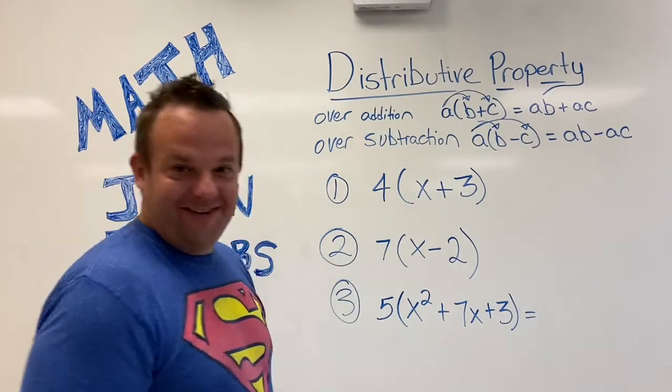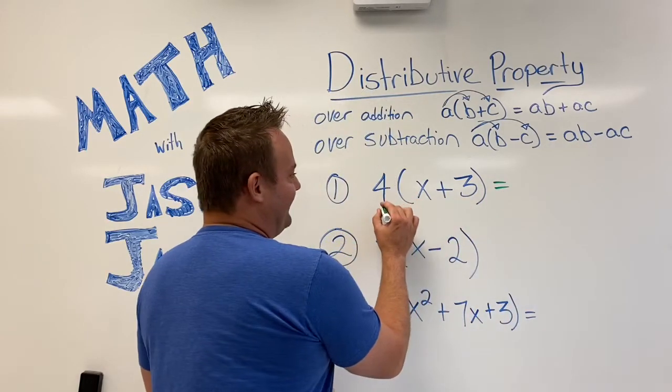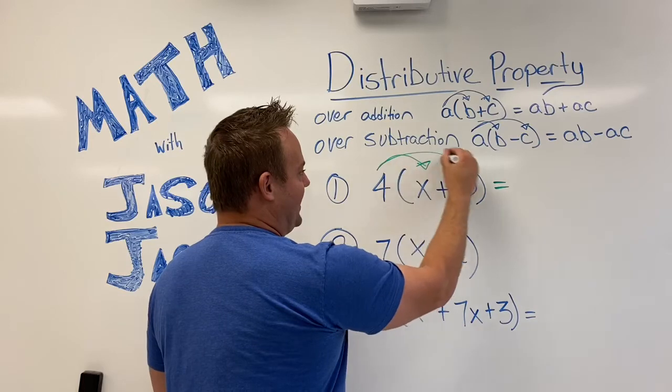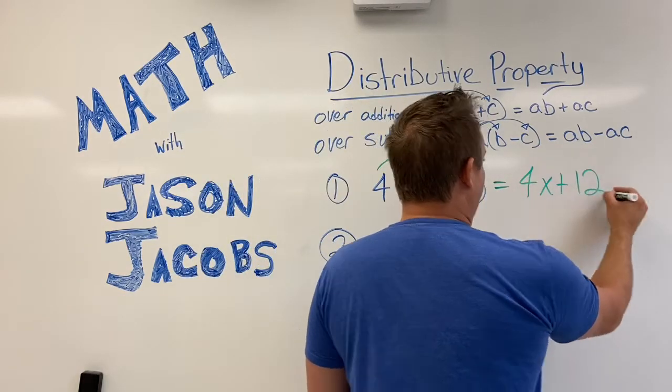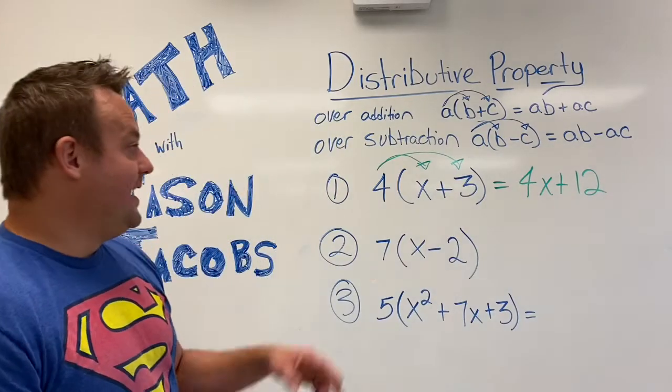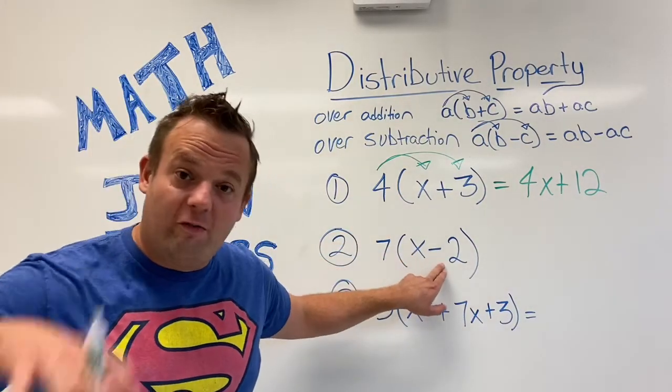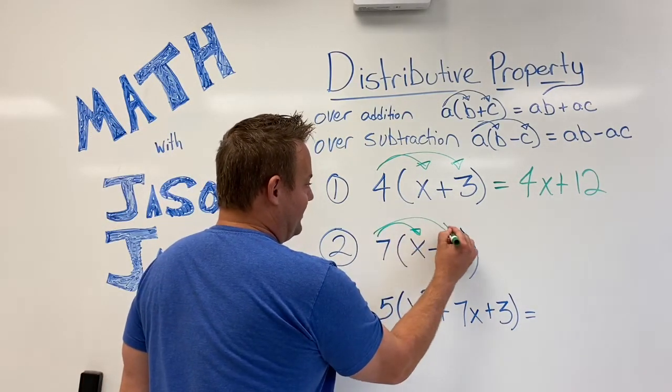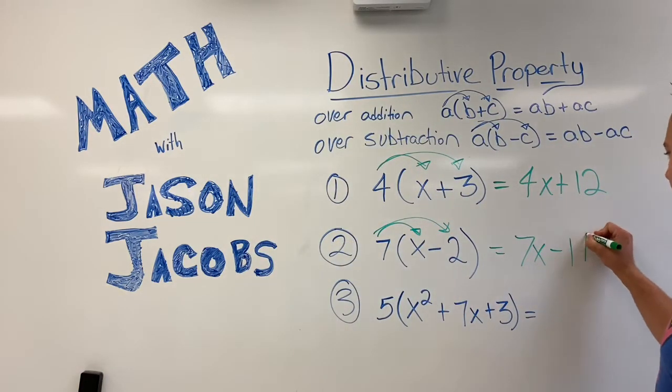All right. Did you pause the video? Hope so. Okay, guys, let's do it. Here we go. So you distribute the four to the x. So you got four times x and four times three. So for this one, you get 4x plus 12, 4x plus 12. This was the distributive property over addition. Now this one's the distributive property over subtraction. So seven times x minus seven times two. And you have 7x minus 14.